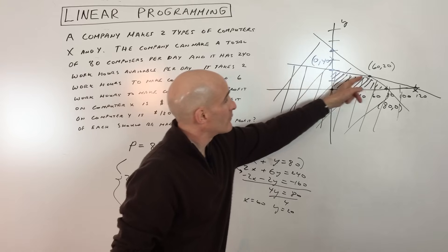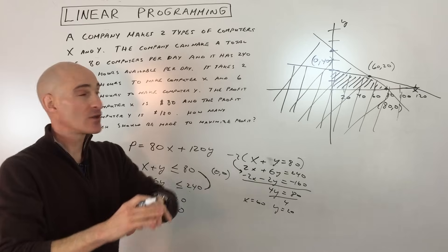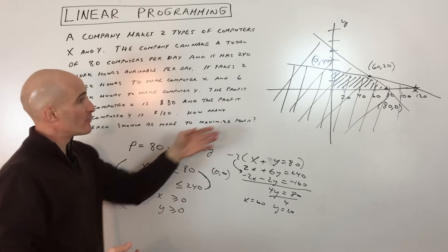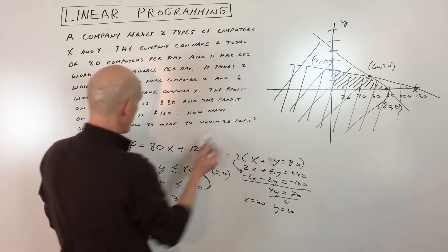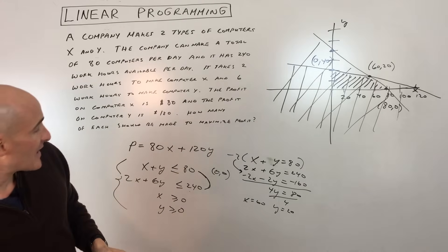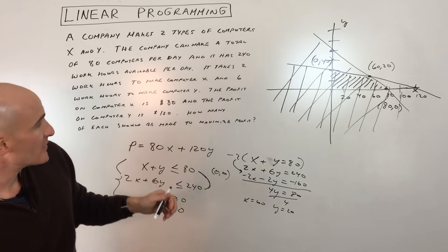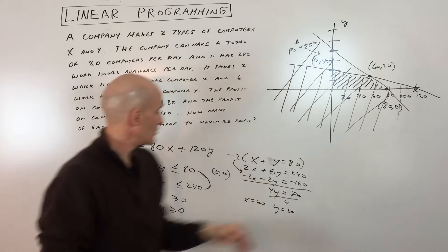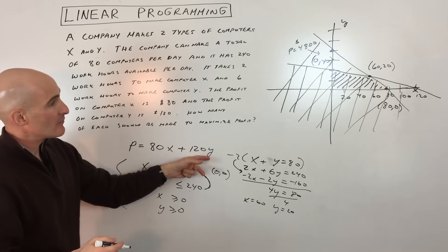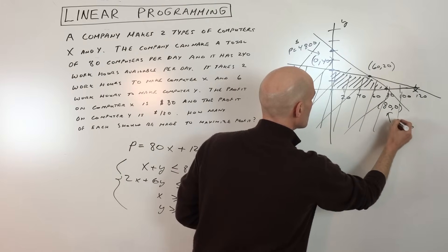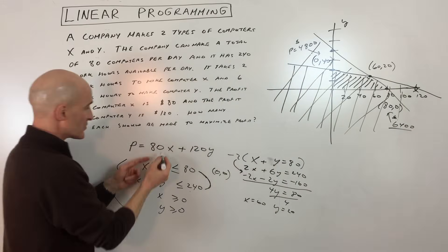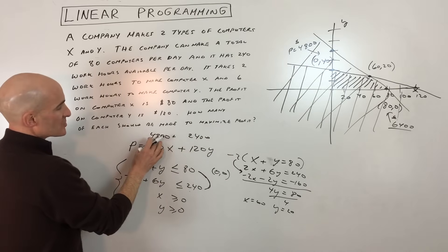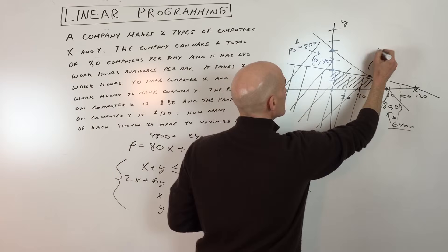Now we have all the vertices of the feasible region and we test them in the profit equation. At (0, 40): profit equals 120 times 40, which is $4,800. At (80, 0): profit equals 80 times 80, which is $6,400. At (60, 20): profit equals 80 times 60 plus 120 times 20, which is 4,800 plus 2,400, giving $7,200. The maximum is at (60, 20).